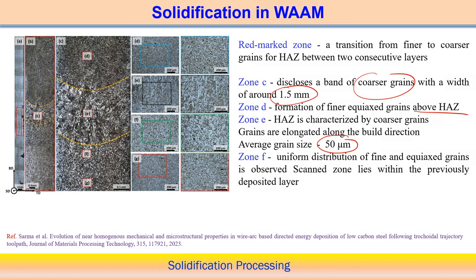Zone F shows a uniform distribution of fine equiaxed grains, with scan zone lines visible within the previously deposited layer. This means uniform fine equiaxed grains are observed. When depositing multiple layers and following a certain tool path, melting and remelting easily occur with many overlapping deposition passes, which influences the structure. The high cooling rate results in finer grain structure.